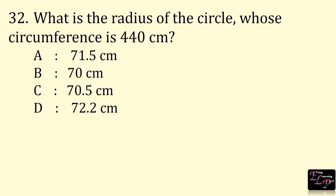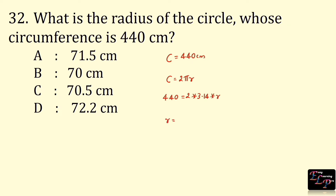What is the radius of the circle whose circumference is 440 cm? Circumference is 440 cm. Circumference of a circle is 2πr: 440 = 2 × 3.14 × r. So r = 440 ÷ (2 × 3.14) = 70 cm. The answer is option B, 70 cm.